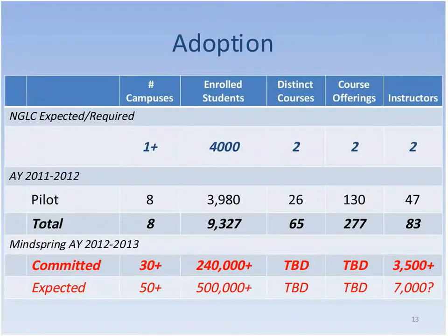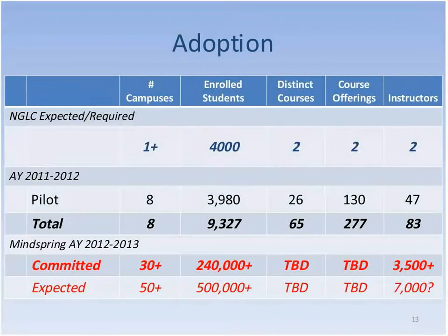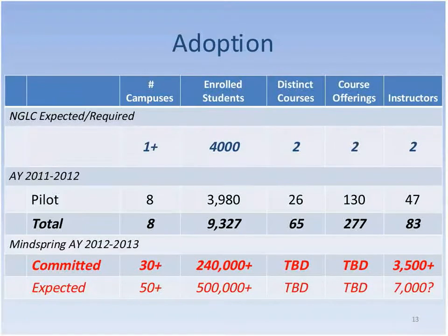Looking ahead to MindSpring, based on commitments from Kentucky and other states, we already have more than 30 institutions and more than 240,000 enrolled students committed. We're talking about more than 3,500 faculty collectively. By Columbus Day, when we plan to launch MindSpring, we hope to have more than 50 institutions serving more than half a million U.S. post-secondary students.